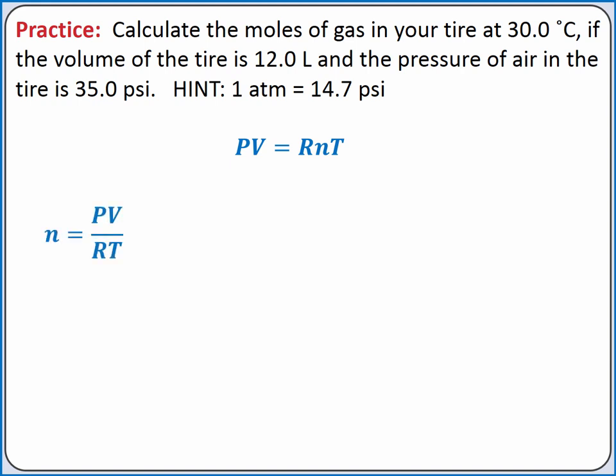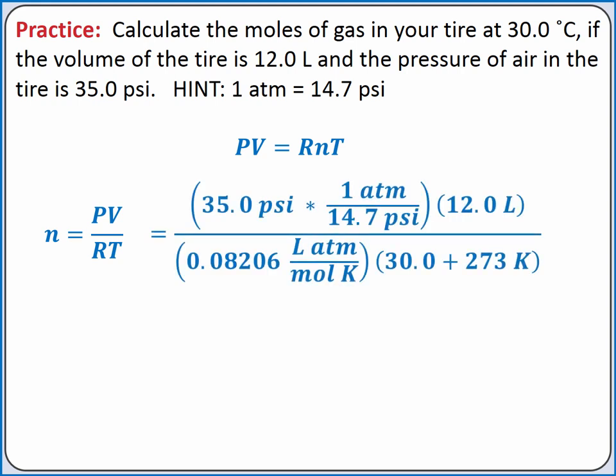We can solve the equation for moles of gas. We have to be careful of units in this problem. Pressure must be converted to atmospheres by multiplying 35 psi times 1 atmosphere per 14.7 psi. Temperature must be converted to Kelvin by adding 273.